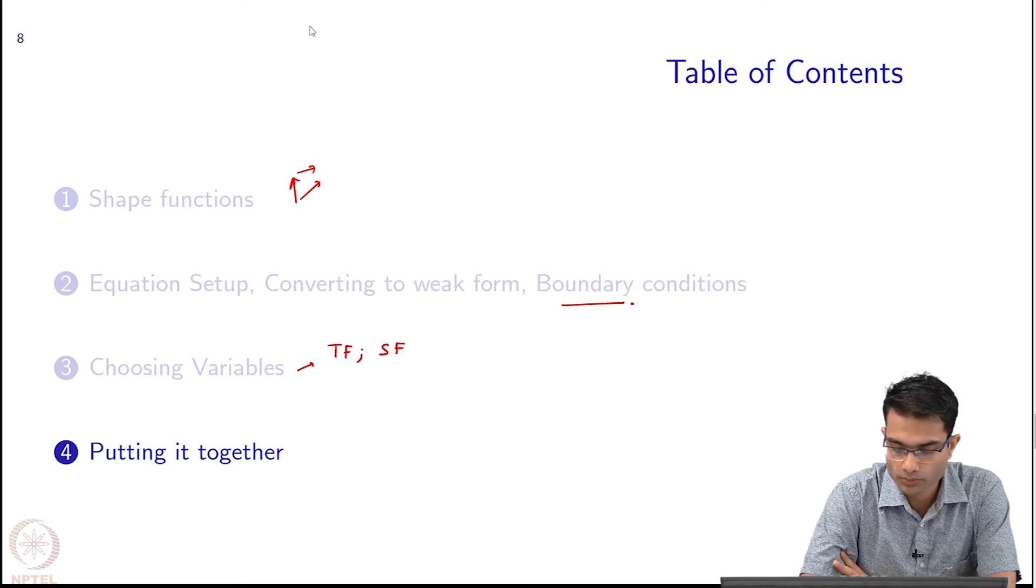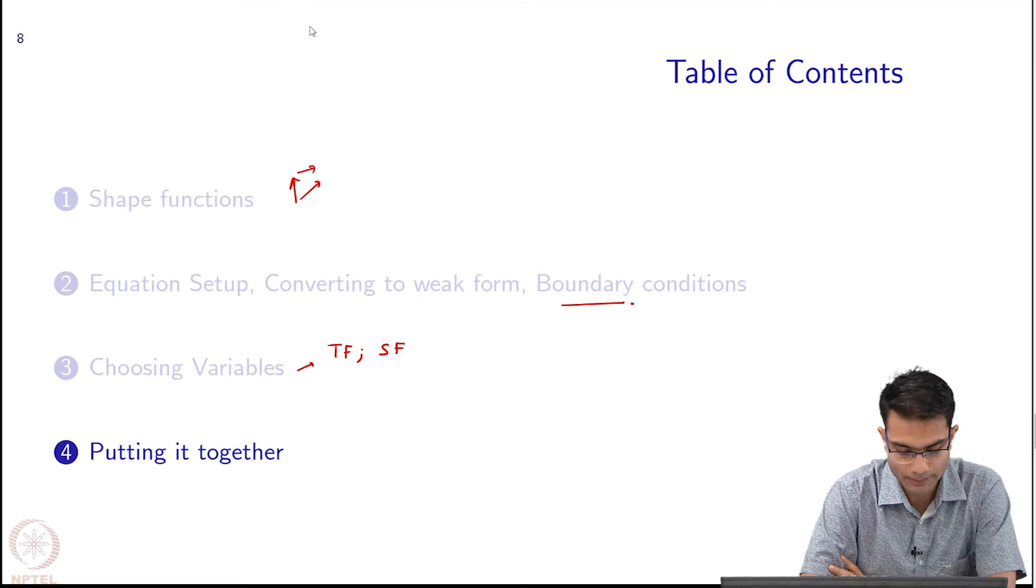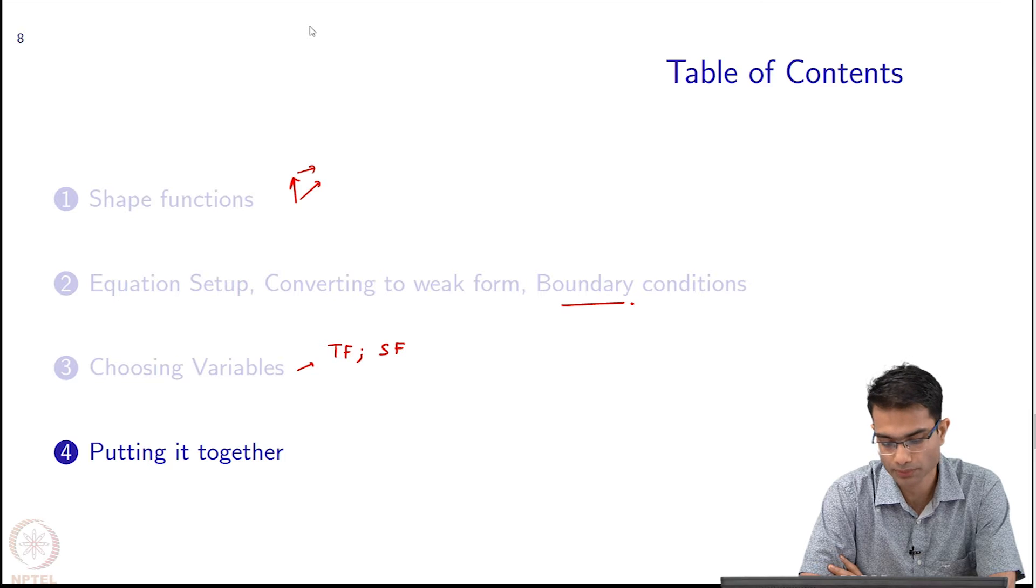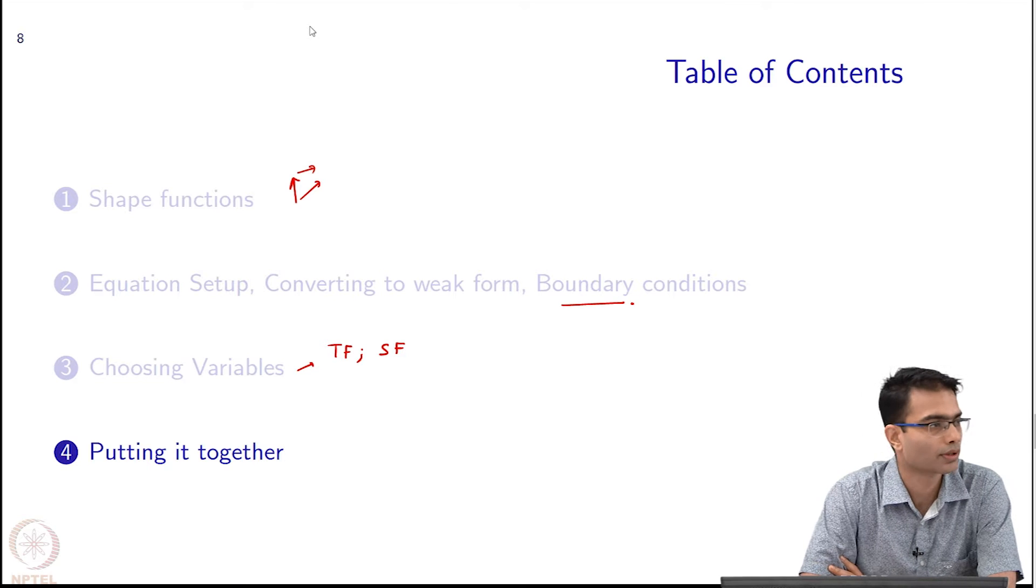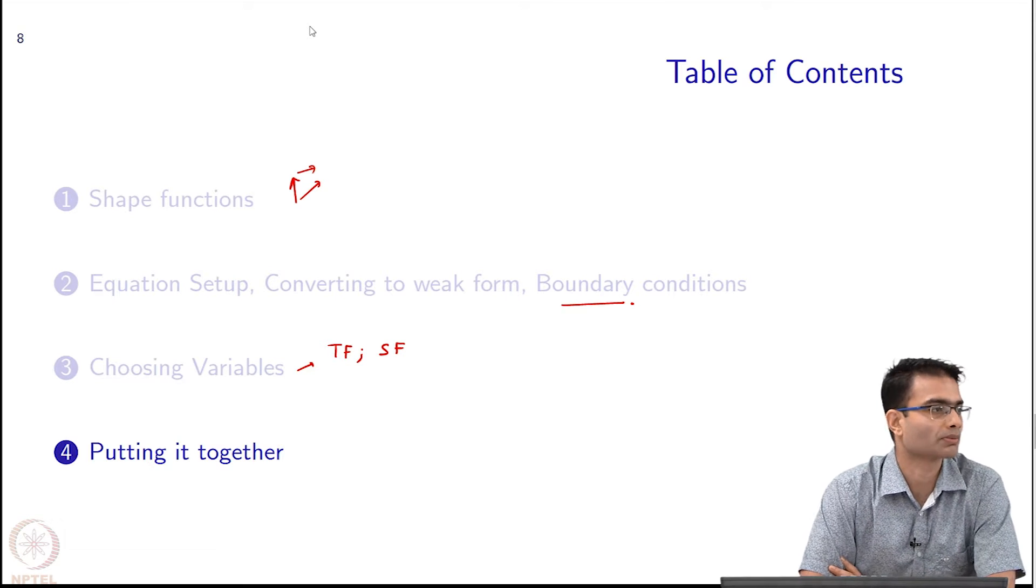Now we come to the final section on the 2D edge-based finite element method. So far we have looked at shape functions, weak form, boundary conditions, and choice of formulation - total field or scattered field formulation.